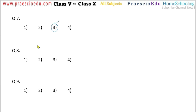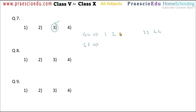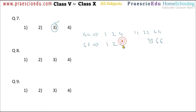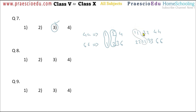Question number 8: which group of numbers represents the common factors of 44 and 66? Factors of 44: 1, 44, 2, 22, 4, 11. Factors of 66: 1, 66, 2, 33, 6, 11, 3, 22. The common factors are 1, 2, 11, and 22.